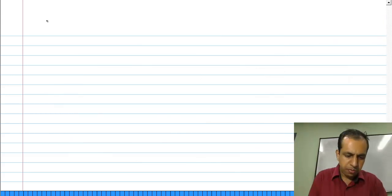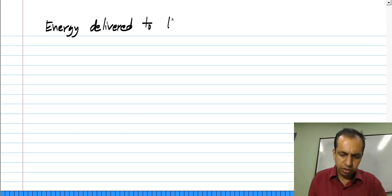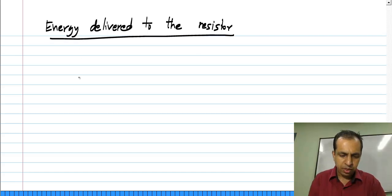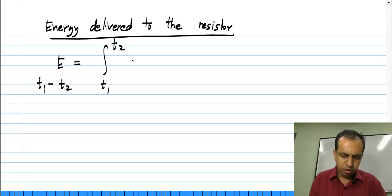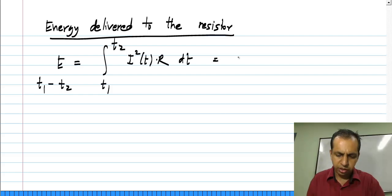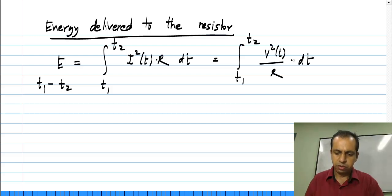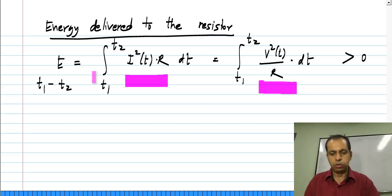Now, consider the energy delivered to the resistor over any time interval, from t1 to t2. It will be the integral of I squared R dt, or the integral of V squared divided by R dt. And this is always greater than or equal to zero, because the power itself is always greater than or equal to zero. So a resistor always absorbs energy — it can never deliver any energy.